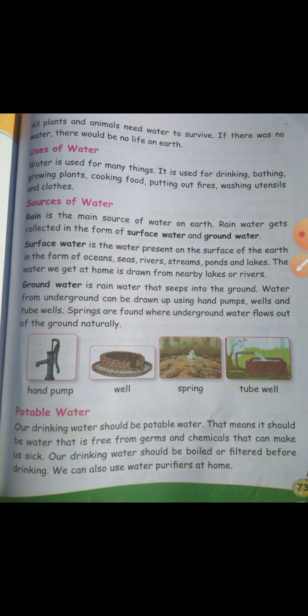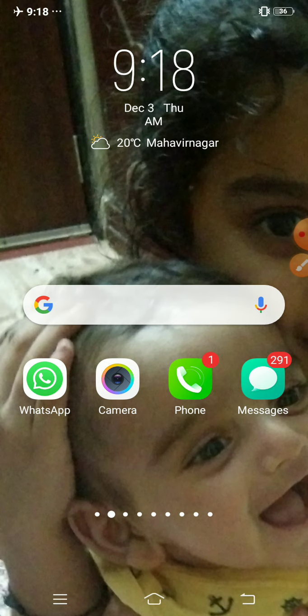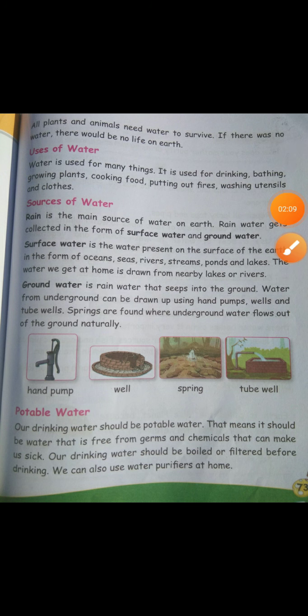Now can you tell me how can we clean our drinking water? The water which we drink should be clean. We can clean that drinking water by boiling it or by using a filter. So we should always drink clean water, and that is potable water — the water that is free from germs and chemicals.